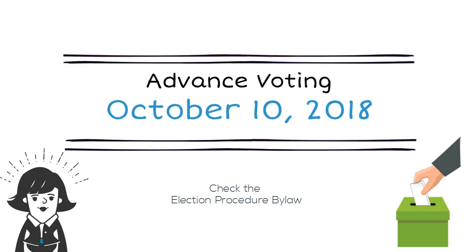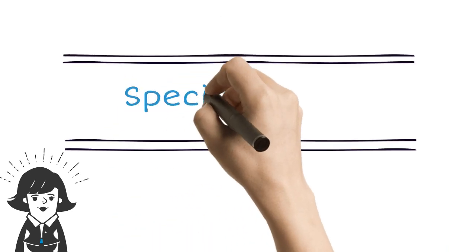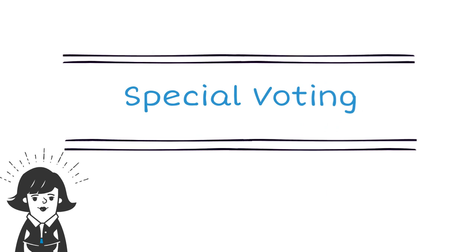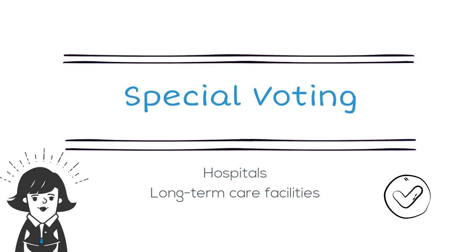Candidates may wish to vote in advance because they may be busy on general voting day. Local governments may hold special voting opportunities at places like hospitals and long-term care facilities to provide electors who may not otherwise be able to attend a voting place an opportunity to cast their ballots.